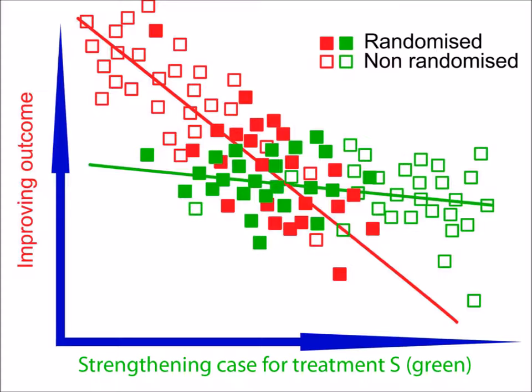For example, if the line plotted for treatment M with only randomised cases included is in a different position from that for treatment M plotted with all cases or with only non-randomised cases, it indicates that selection is occurring to a degree that is quantifiable by the difference between the lines. I will return to this in more detail in a future video.